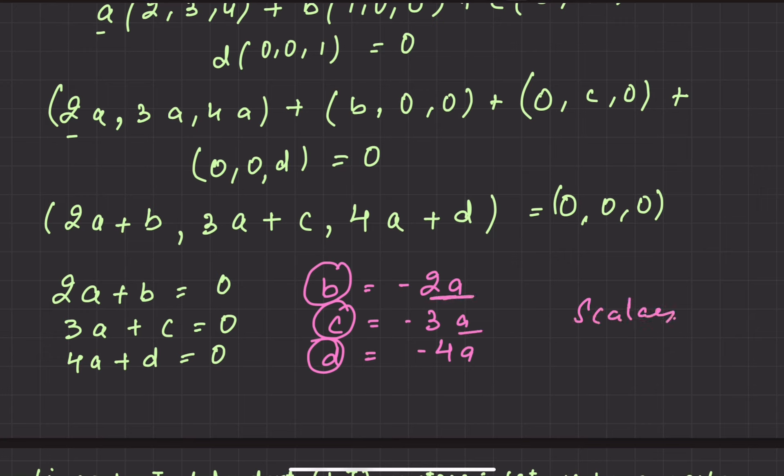Now these scalars depend on a. Basically, what are these? These are non-zero. If a is not equal to 0, then b, c, and d, these scalars are not 0.